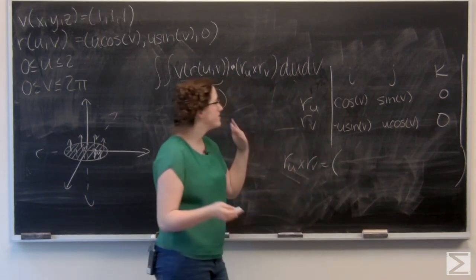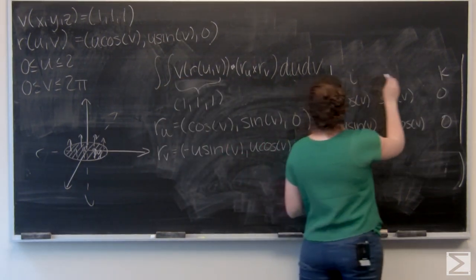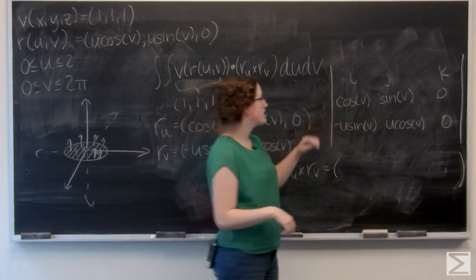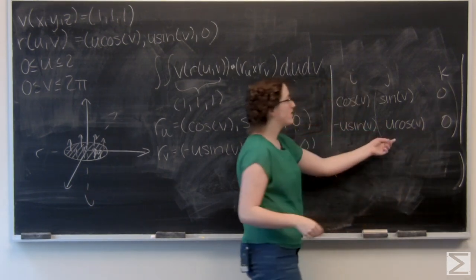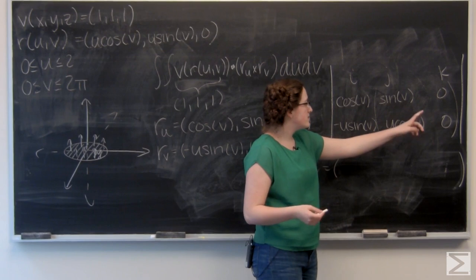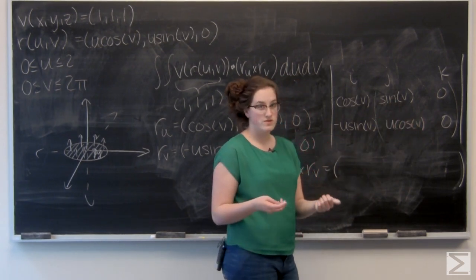And now let's find the components of our cross product. So I'm going to cut the top column, and I'm going to cut the leftmost row. So I'm looking at a 2 by 2 matrix here, and I want to find the determinant to find the i component. So I've got sine of v times zero, minus u cosine of v times zero, so the i component for this vector is just going to be zero.